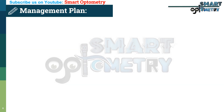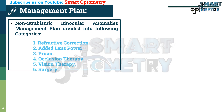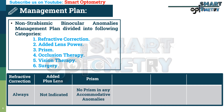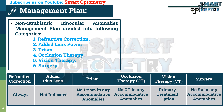Now, the management plan for accommodation excess. Non-strabismic binocular anomaly management is divided into the following categories: 1. Refractive correction — should always be given for accommodation excess patients. 2. Added plus lens — not indicated in accommodation excess. 3. Prism — no prism is indicated in any accommodative anomalies. 4. Occlusion therapy — not indicated in any accommodative anomalies. 5. Vision therapy — the primary treatment option for accommodation excess patients. 6. Surgery — no surgery is indicated in any accommodative anomalies.